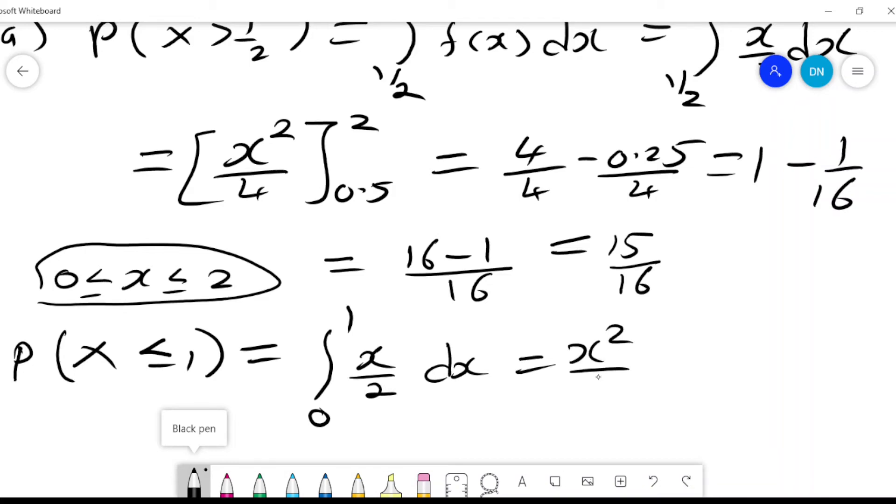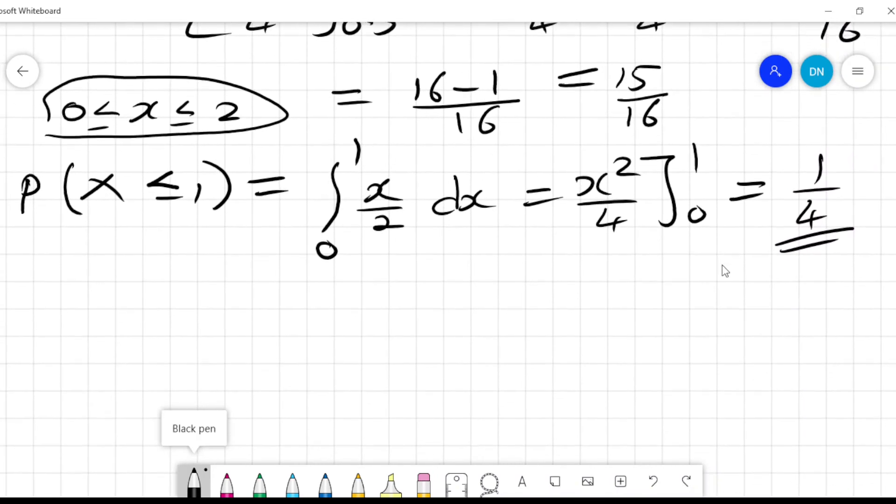Which is x squared over 4, and then 0 to 1 will be equals to a quarter. And that will be the solution. So you have to keep in mind the limits of integration or the values for which X is still valid.